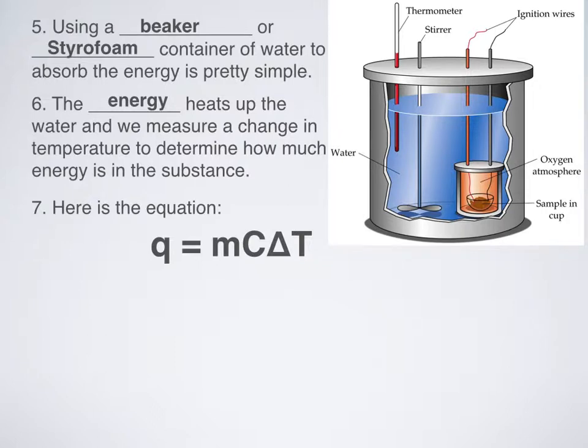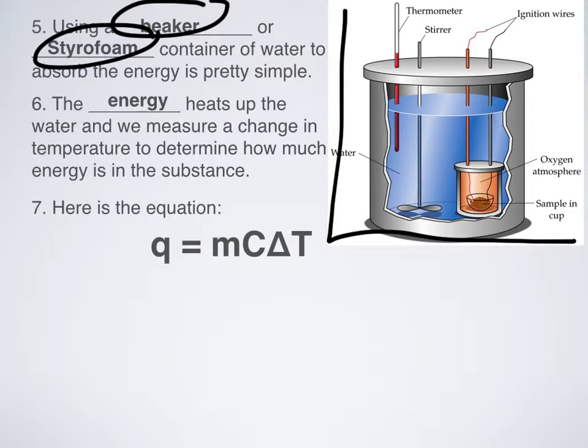Now, how are we going to make a calorimeter if we don't have one of these really fancy-looking ones? Well, you can actually use a beaker or a styrofoam cup. Styrofoam containers are notoriously good at maintaining heat. They don't really absorb any heat. And they don't really release any heat. They're good at keeping kind of a constant internal energy amount.